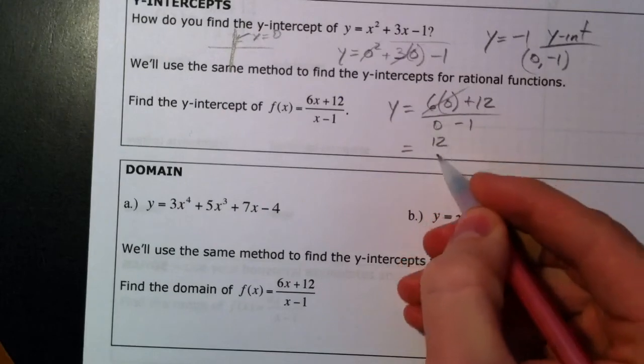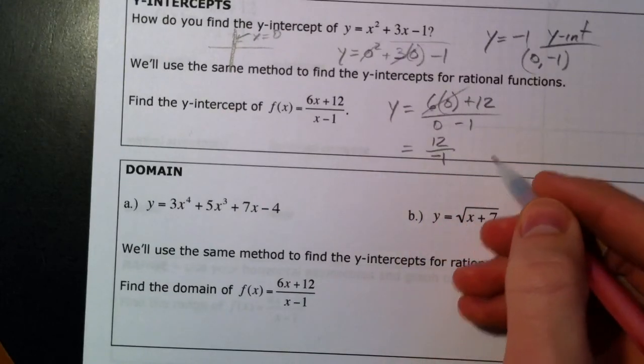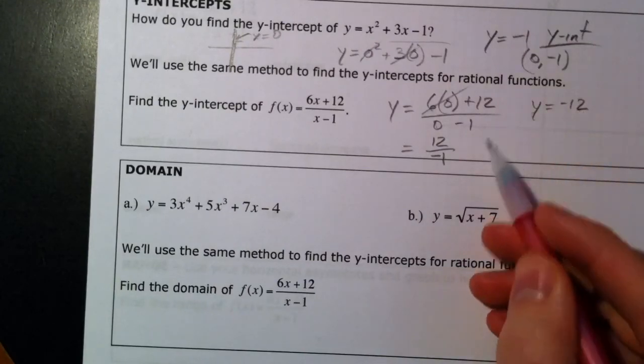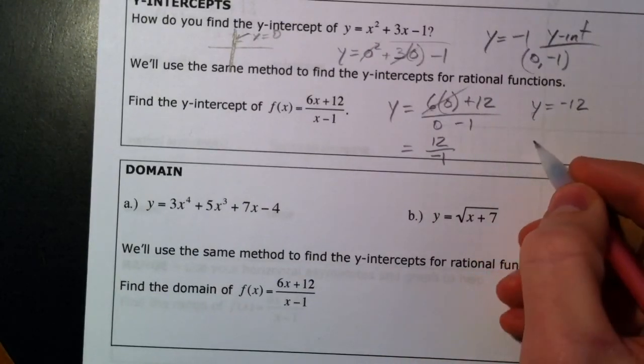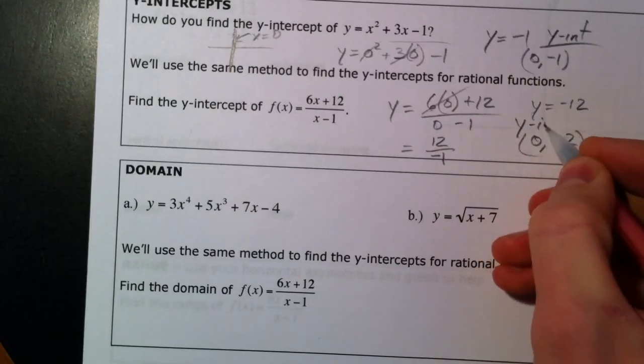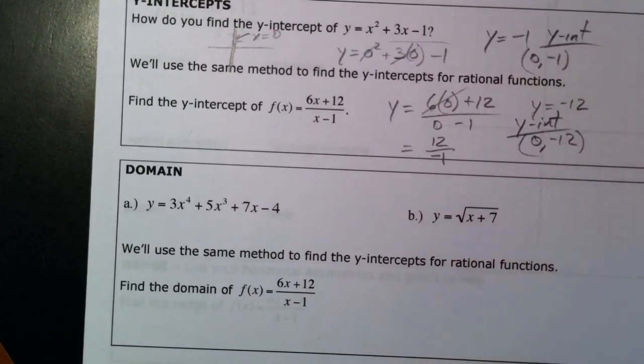And so y equals negative 12, because 12 divided by negative 1 is negative 12. 0, negative 12 is our y-intercept. That will come in handy at the end.